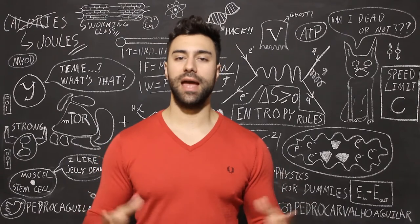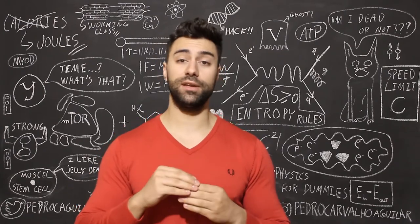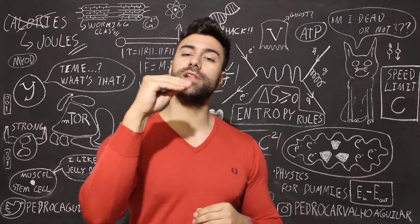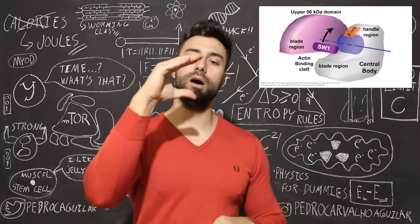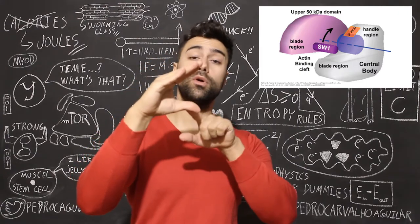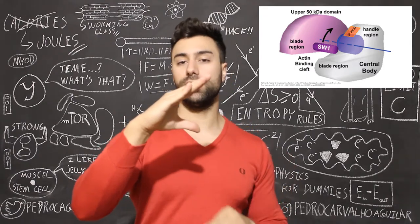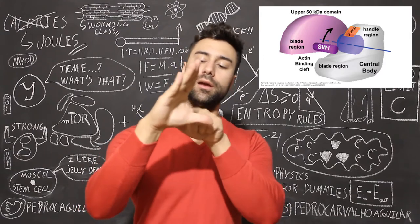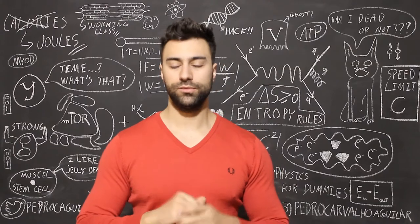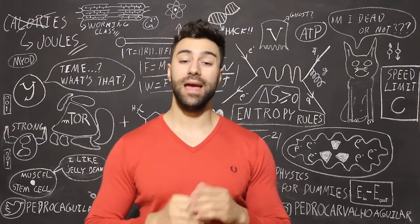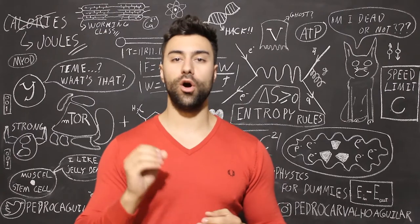Now let's look at the myosin head structure. The myosin head has an upper region and a lower region — you can think of it like a little pac-man head. The upper region is called the upper 50 kDa and the lower region is the central body. There is an axis of rotation called the beta sheet, a P-loop structure on the central body, and switch one on the upper region. The myosin head has a strong affinity for actin in its closed conformation and a lower affinity in its open conformation.